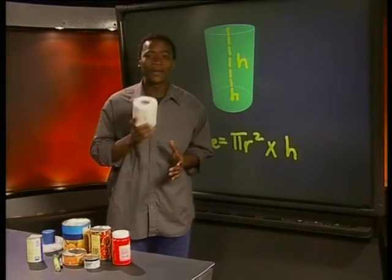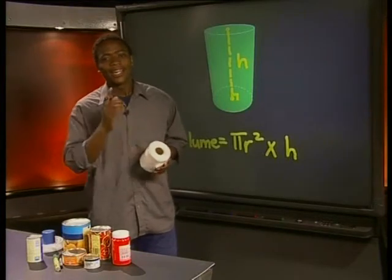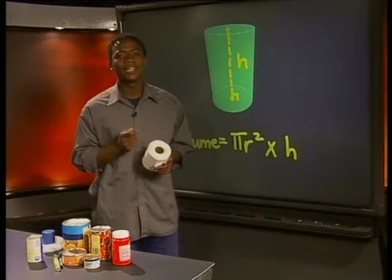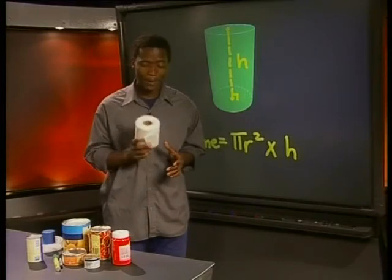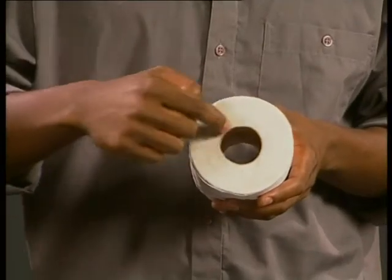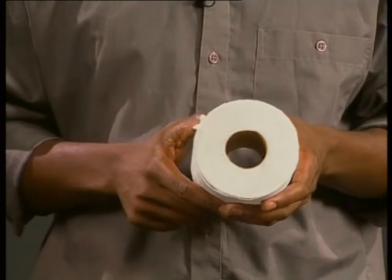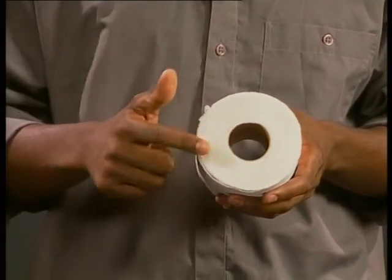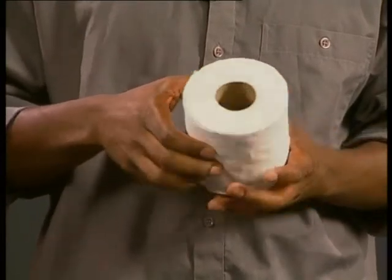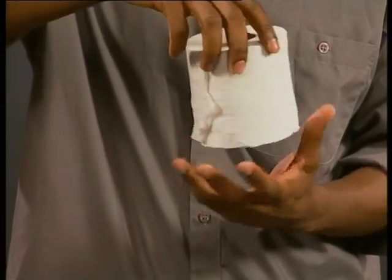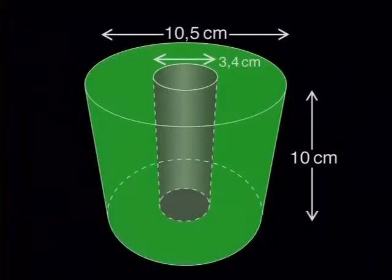Have you ever wondered how much toilet paper there is on a toilet roll? Let's see if we can use the formula for the volume of a cylinder to calculate the volume of toilet paper on a toilet roll. Through the middle of the roll, there's a cardboard cylindrical part that is hollow, and the rest of the roll is made up of paper tightly wrapped around it. We have measured the toilet roll and found that the diameter of the whole roll is 10.5 cm, the diameter of the hollow inside is 3.4 cm, and the height of the roll is 10 cm.